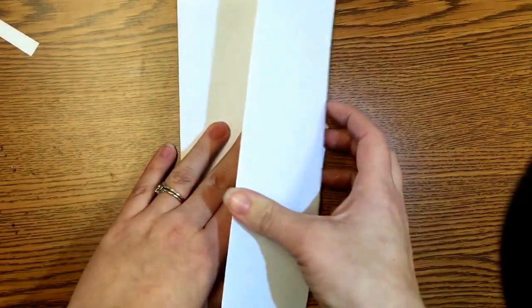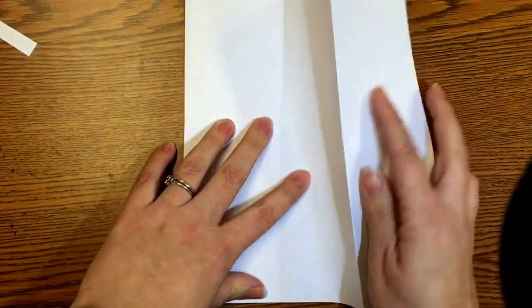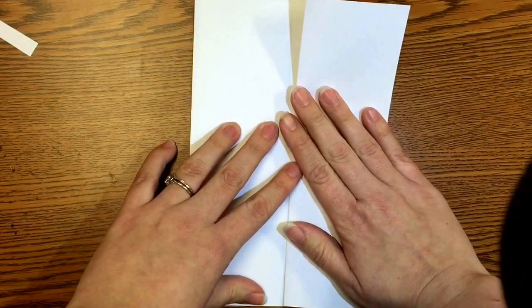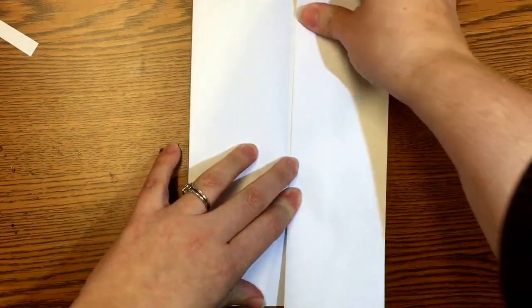Now here comes the fun part. You're going to flip your paper over again. And you're going to take this folded edge and fold it back in to the middle crease.